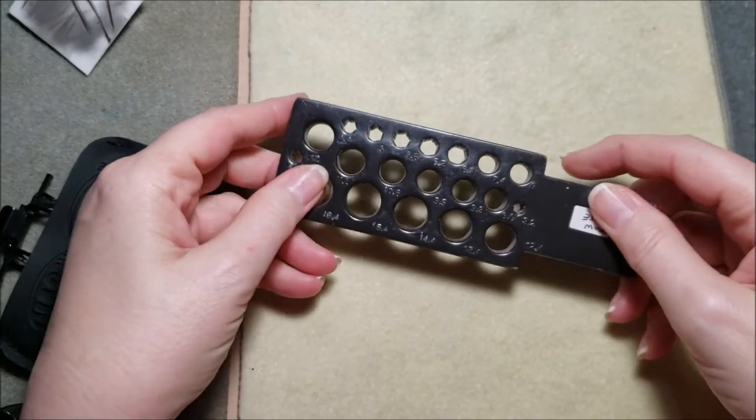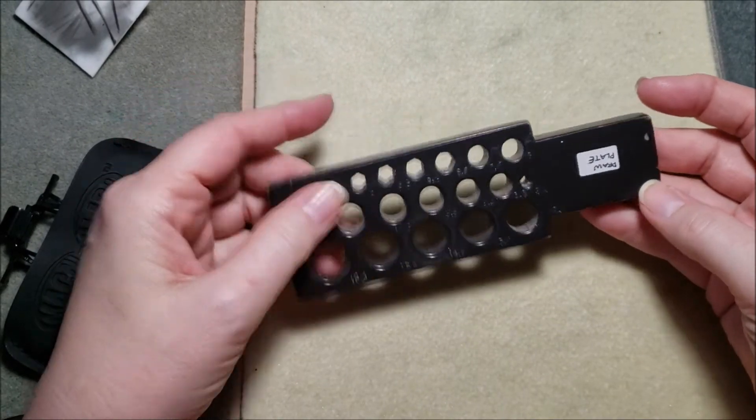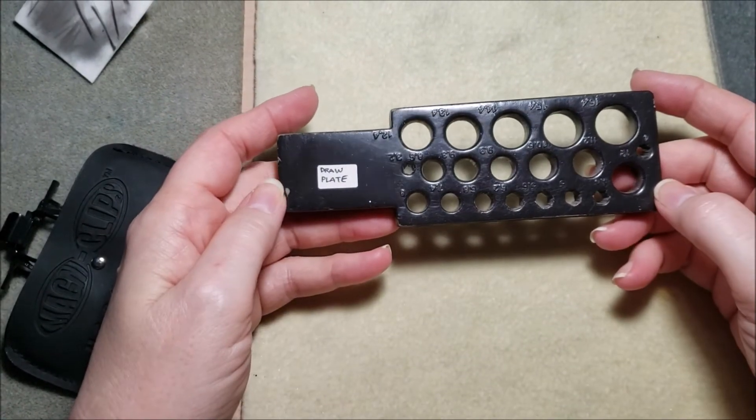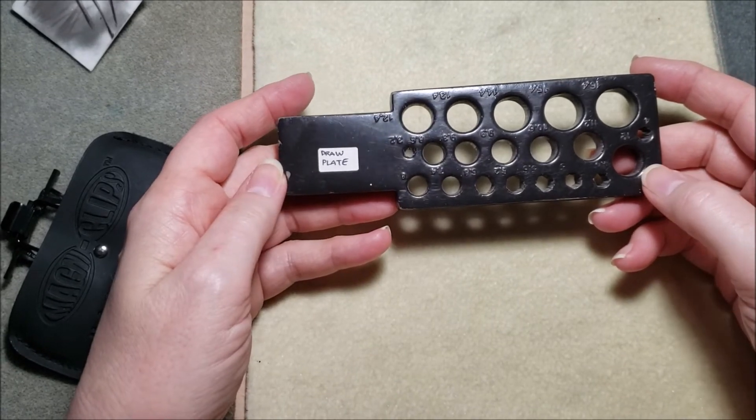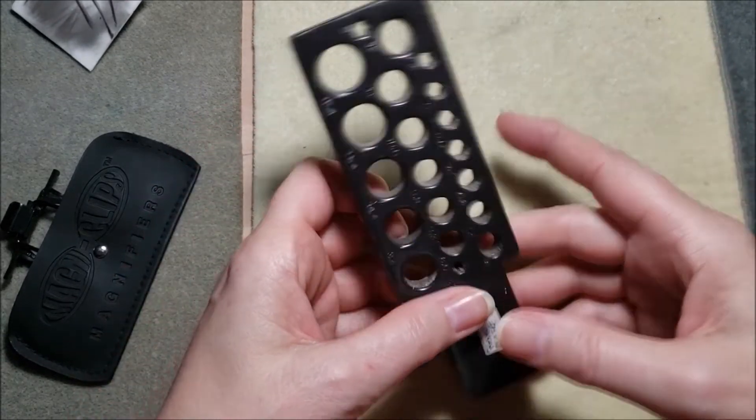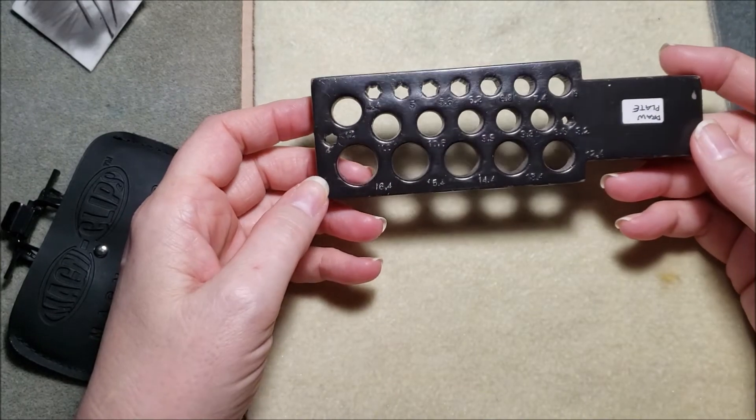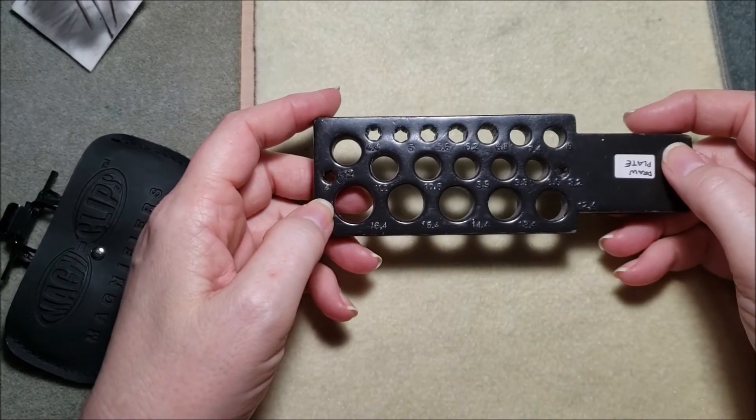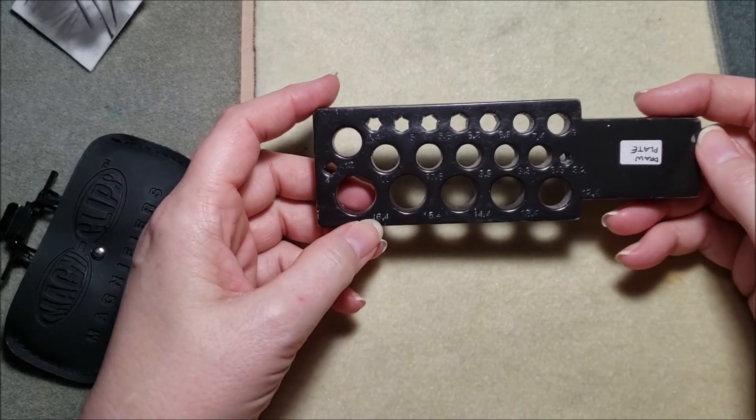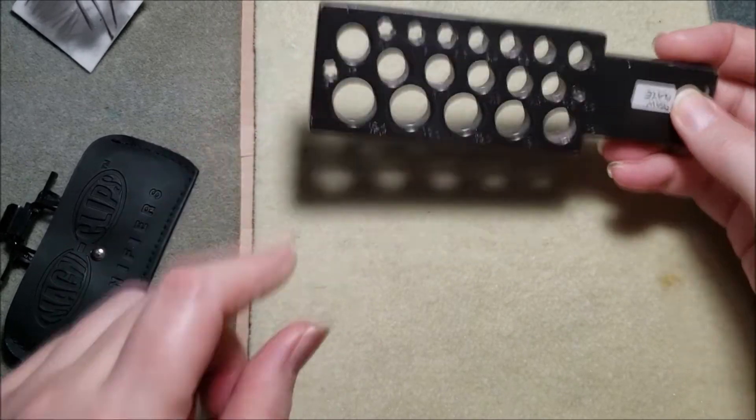You're going to need a draw plate. This is a plastic draw plate. They can be had fairly inexpensively. I'll put in the description box below this video a couple of sources for this. Once you finish your Viking wire knitting, you're going to need to draw it down to a narrower thickness. And I'll explain more about that when the time comes, but you will need one of those.